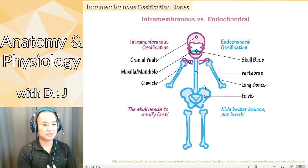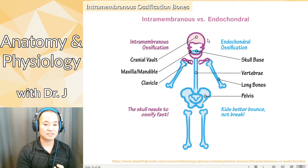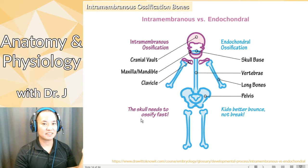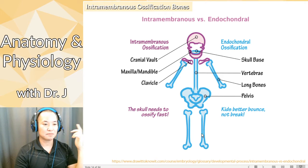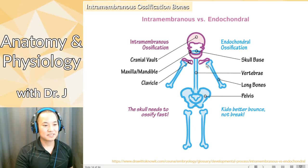So here's where intramembranous versus endochondral bone formation differs. In the diagram, the purple parts show intramembranous ossification — occurring in the fetus. The skull needs to ossify fast because the brain is contained within it, and you want to protect the brain as soon as possible. During most deliveries, the head comes out first, so it makes sense to protect that squishy developing brain.